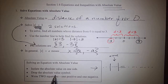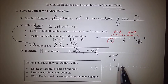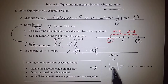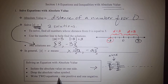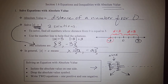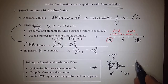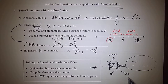The next step is to drop the absolute value symbol — we will get rid of it and just leave what is inside. Then the last part says we are going to write two separate equations. One will equal the positive version of this side, and the other one will equal the negative version of the right side.